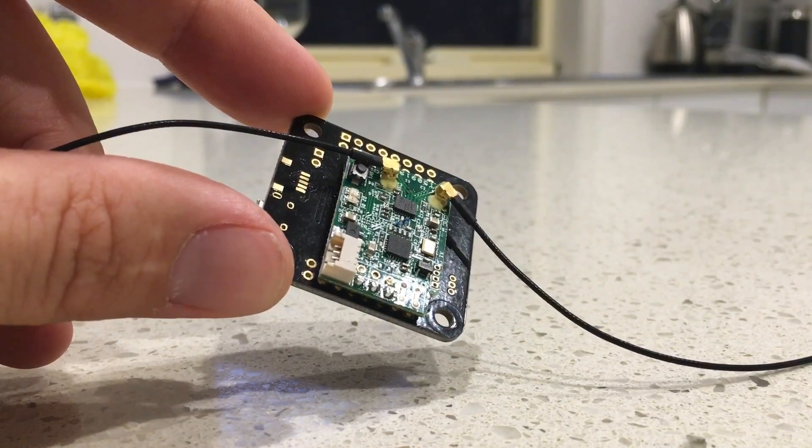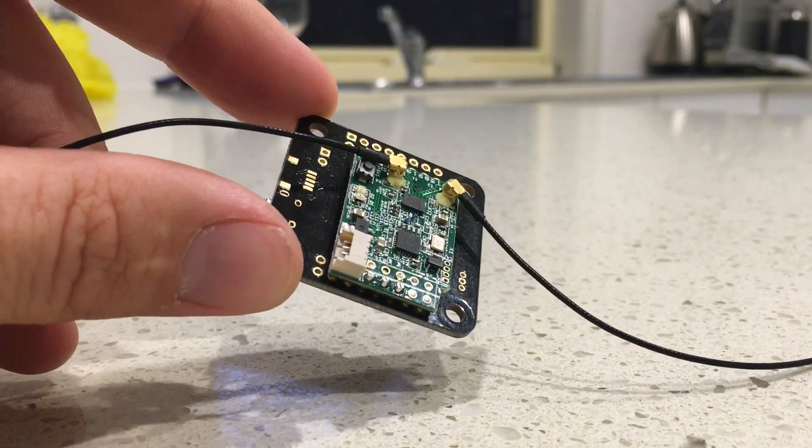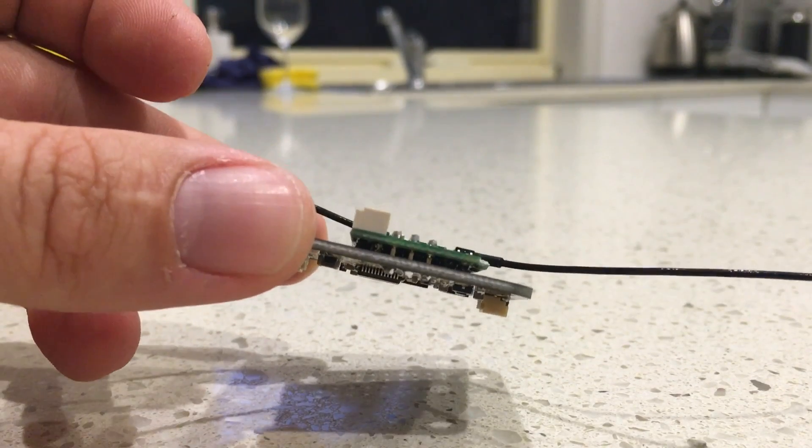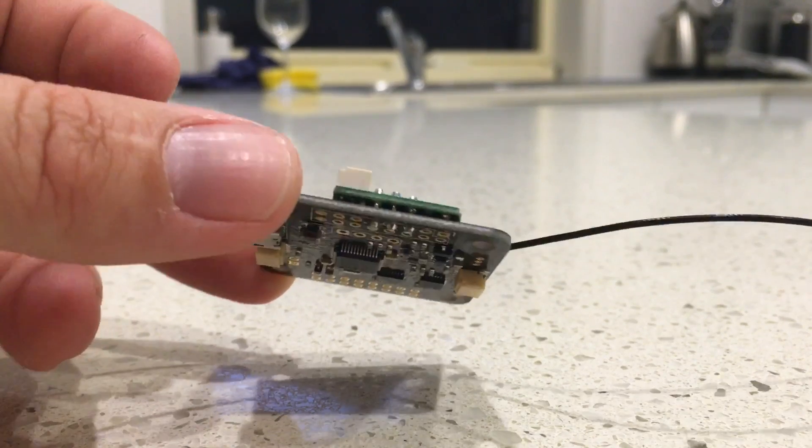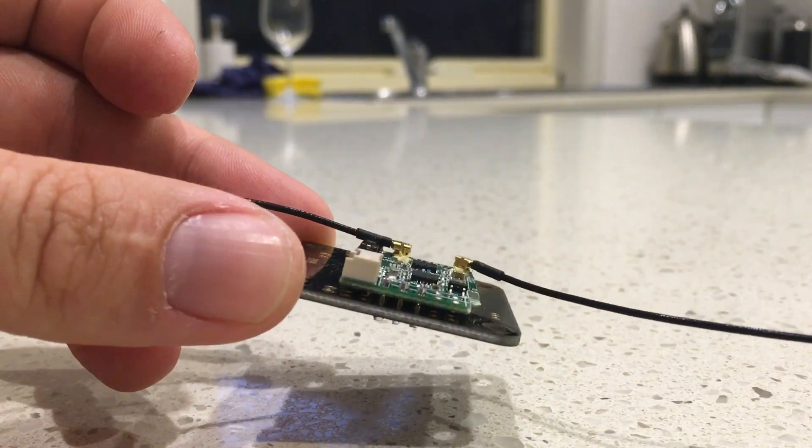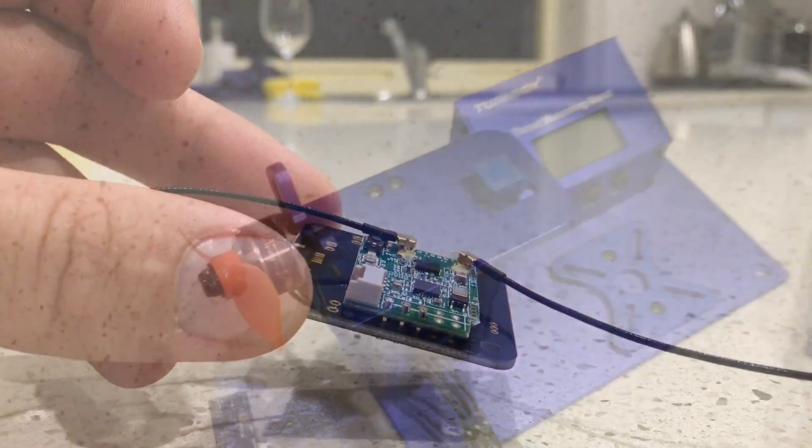The FrSky X4R receiver that's been de-pinned is now connected or pinned directly to the flight controller to the SBUS signal positive and negative pins.